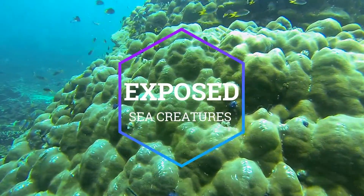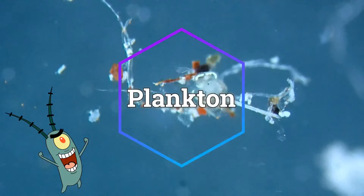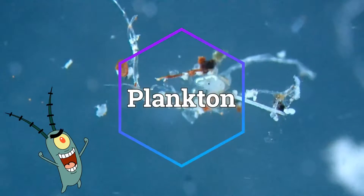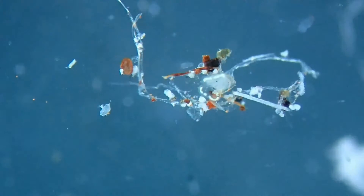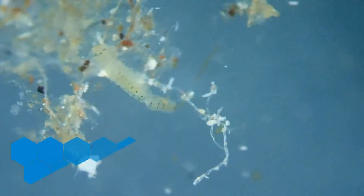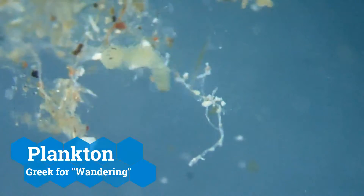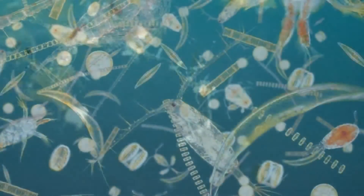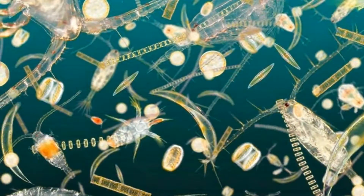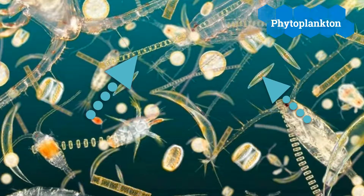Most people have heard the term before, but what exactly is plankton? Plankton describes all organisms that live in the open water and cannot actively move against the current. The group plankton can again be divided into phytoplankton, all algae, and zooplankton, all little organisms.